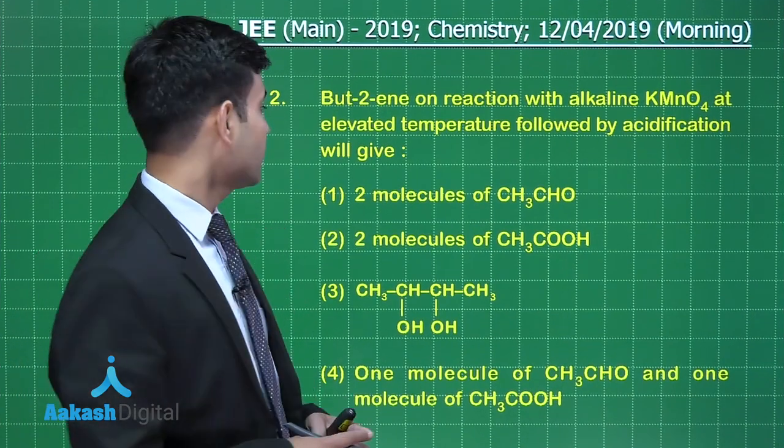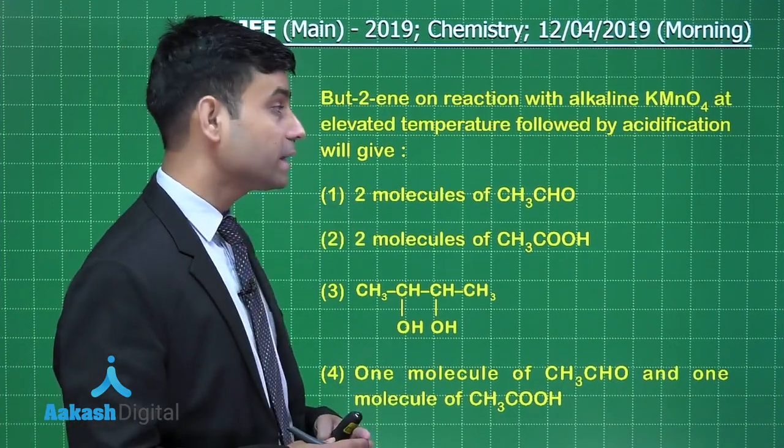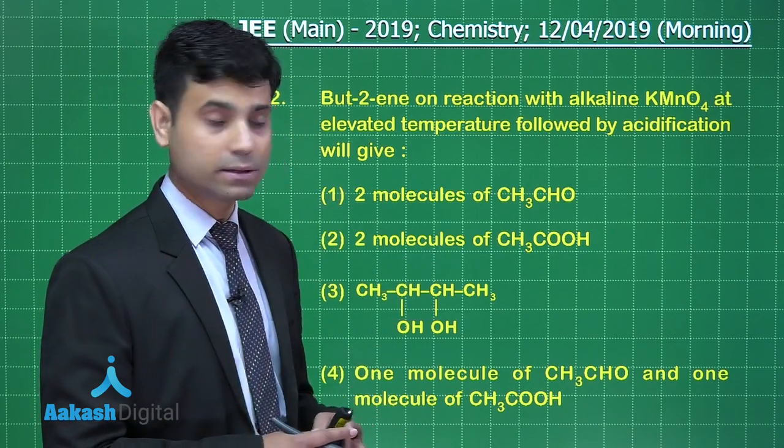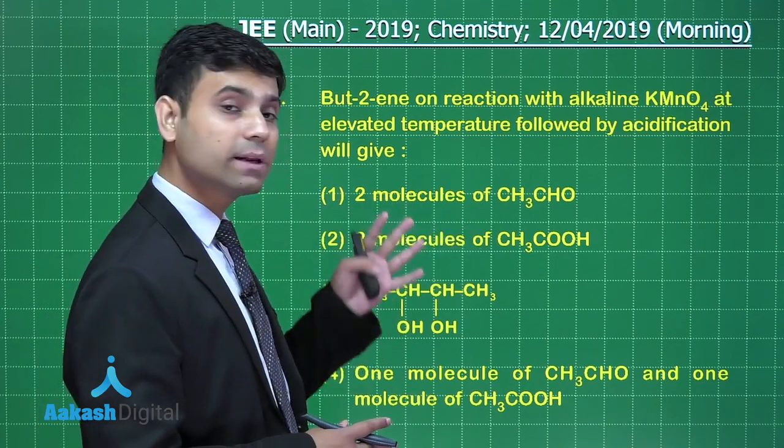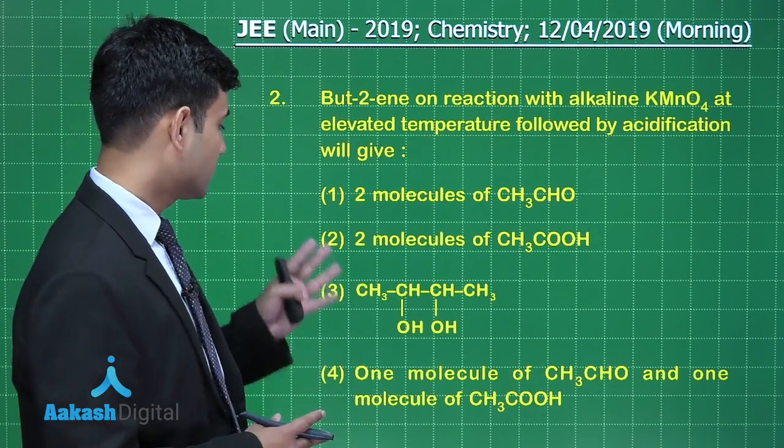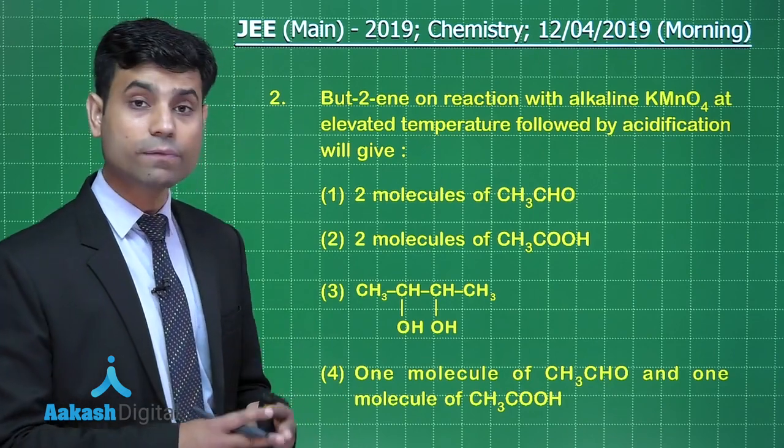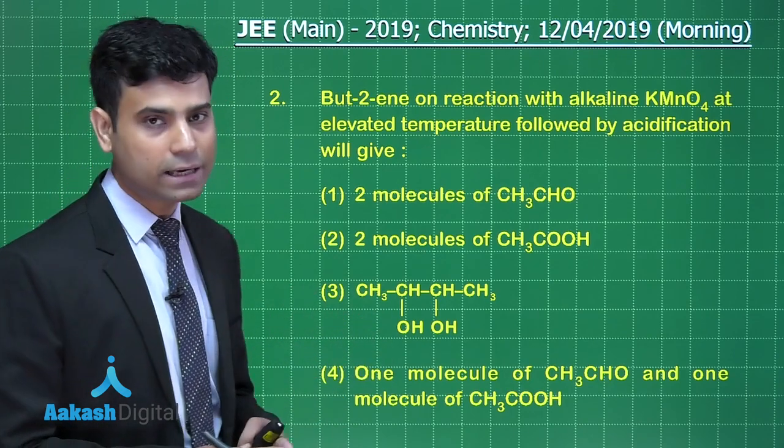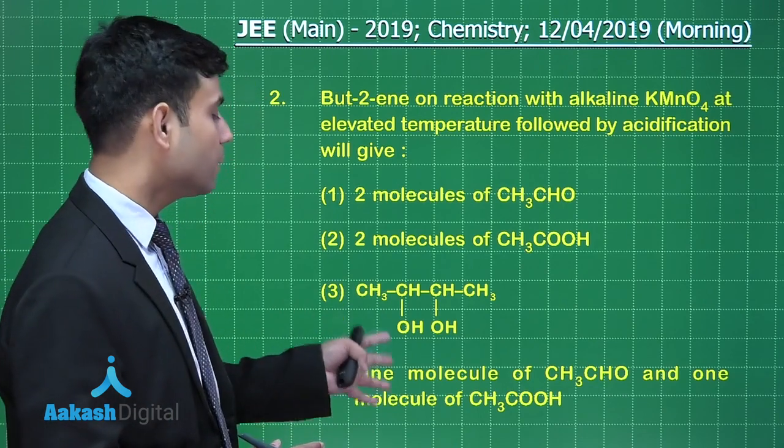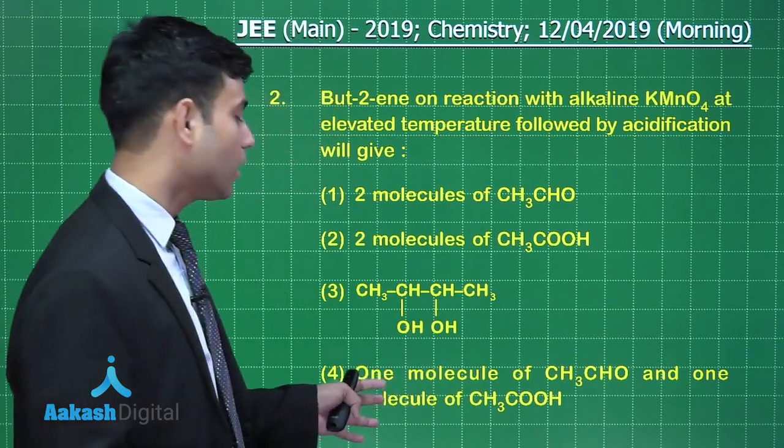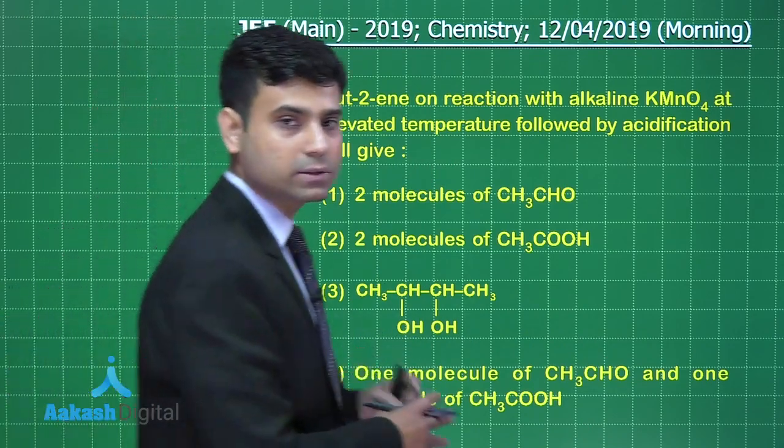This is the next question. It says butene on reaction with alkaline KMnO4 at elevated temperature followed by acidification will give: first option is two molecules of acetaldehyde, second option is two molecules of acetic acid, third option is butane-2,3-diol, fourth option is one molecule of acetaldehyde and one molecule of acetic acid. Let us solve this question.